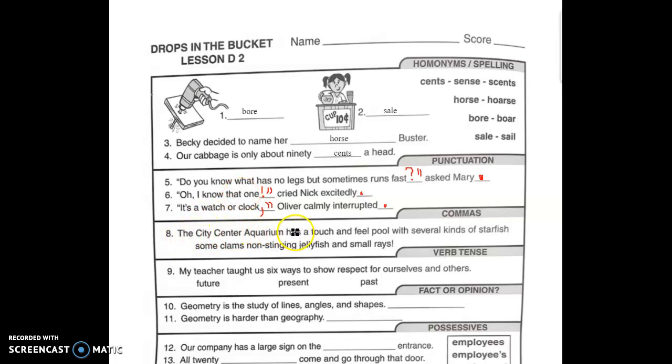The city center aquarium has a touch and feel pool with several kinds of starfish, comma, some clams, comma, non-stinging jellyfish, comma, and small rays. This section of the review will always deal with commas. We use commas when we list things in a series. And you use a comma before and.